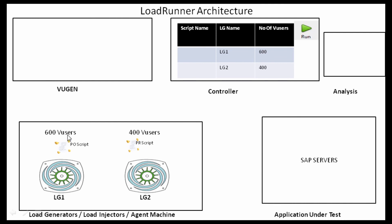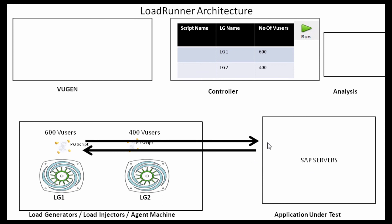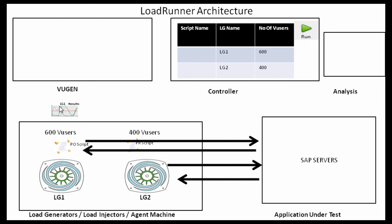Usually in the real world when you run a load test, you run the test for one hour — which means these 600 users will be continuously running the Purchase Order script for one hour, and 400 users will be continuously running the Purchase Requisition script for one hour. As they are running the scripts, requests will be sent to the SAP servers and the SAP server will send the response back. The same thing happens with the PR script as well.